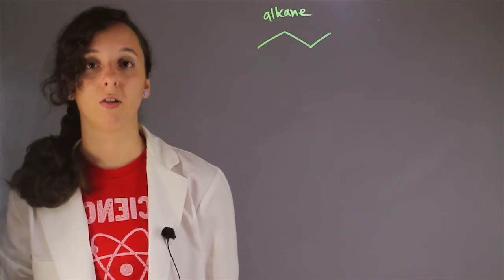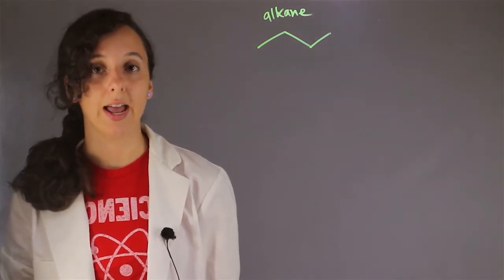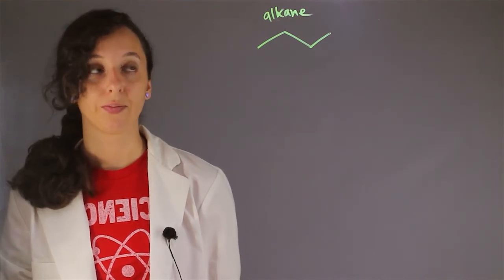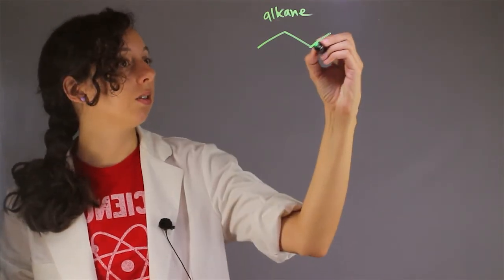And so remember that if it has a double bond, it's called an alkene. If it has a triple bond, it's called an alkyne. So our alkanes just have single bonds.